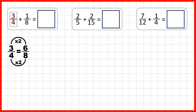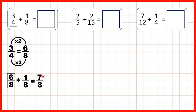We found that three quarters is equivalent to six eighths, so we can rewrite our question. Instead of three quarters we write six eighths, and we're adding one eighth. Now our denominators are the same, so we keep the denominator the same in our answer and just add the numerators. Six plus one is seven, so our answer is seven eighths.